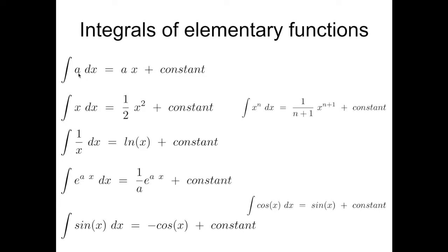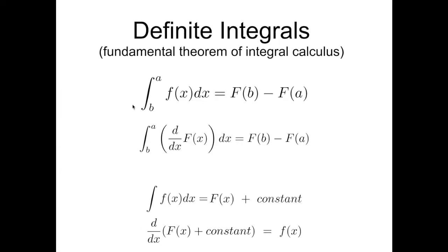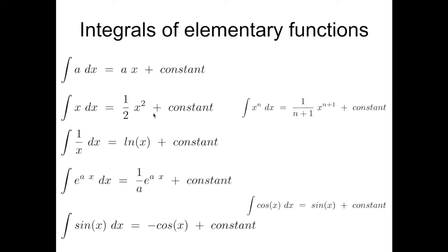For instance, the derivative of a constant is a linear function plus arbitrary constant. The derivative of a linear function is a parabola, is a square function, with the exception of this factor 1 half, which is used to compensate for the fact that the exponent 2 is actually moving at the beginning.